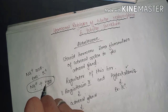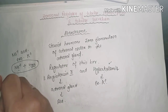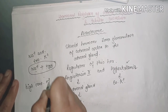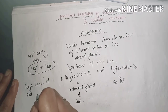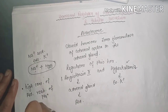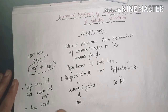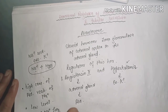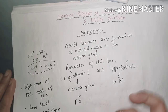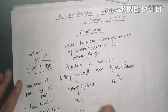A high concentration of aldosterone leads to reabsorption of sodium, while a low level of aldosterone leads to the loss of sodium from the kidney. This absorption and excretion occur in the distal convoluted tubule of the kidney.